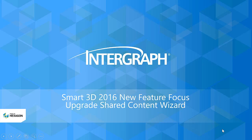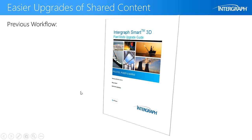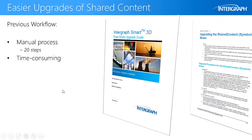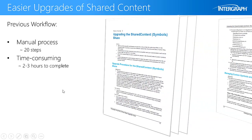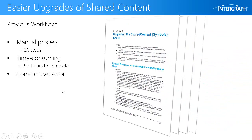This is a Smart3D 2016 New Feature Focus on the Upgrade Shared Content Wizard. In Smart3D version 2016, we've made it easier to upgrade your company's shared content. In previous releases, this process was a manual task with many steps that were time-consuming and prone to user error.